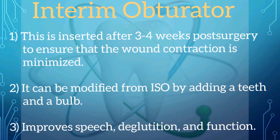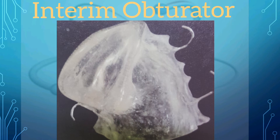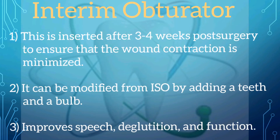The interim obturator is inserted three to four weeks post-surgery to ensure wound contraction is minimized. It can be modified from the immediate surgical obturator by adding teeth and a bulb. This type of obturator improves speech, deglutition and function, and if the patient undergoes radiation therapy it can be used to maintain the defect and provide adequate function.